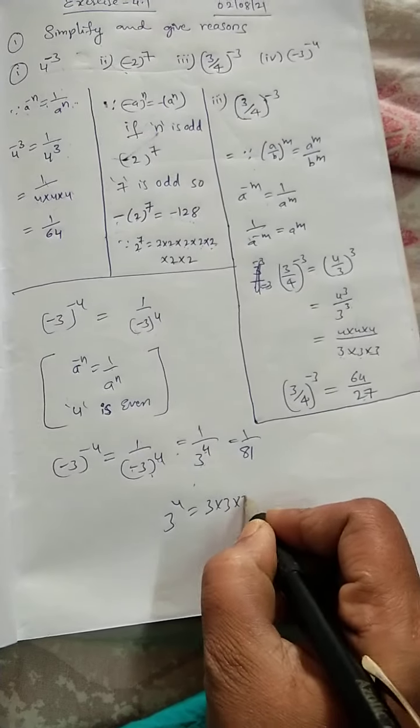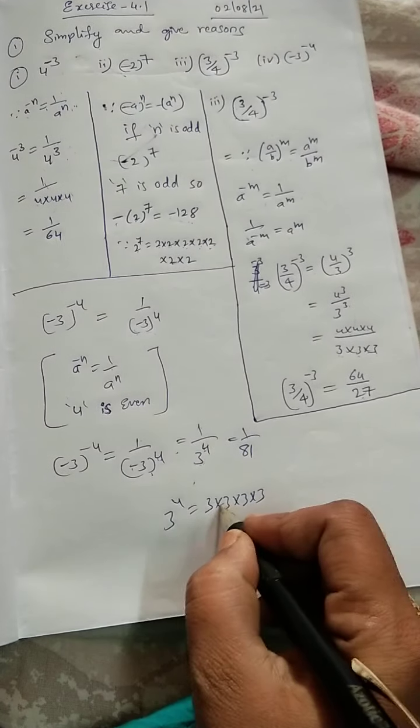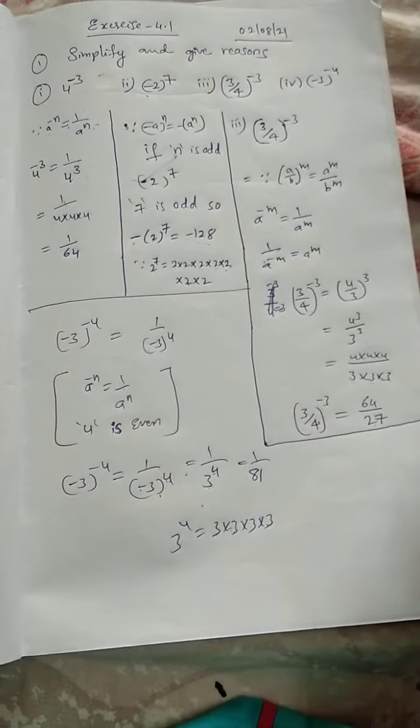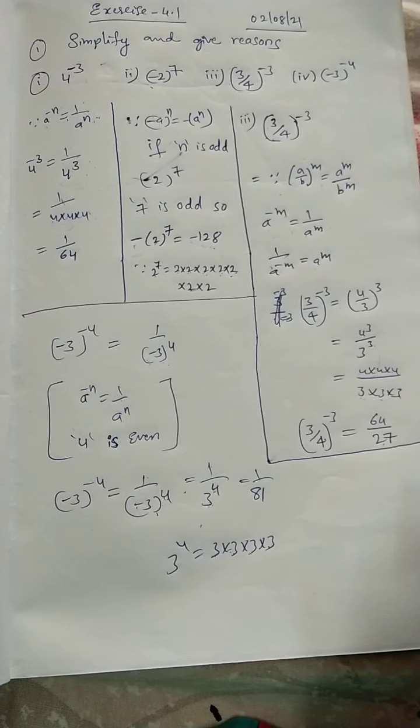How? See, 3 into 3 into 3 into 3. 3, 3 is 9, 9, 3 is 27, 27, 3 is 81. Okay? I hope you understood. Thank you.